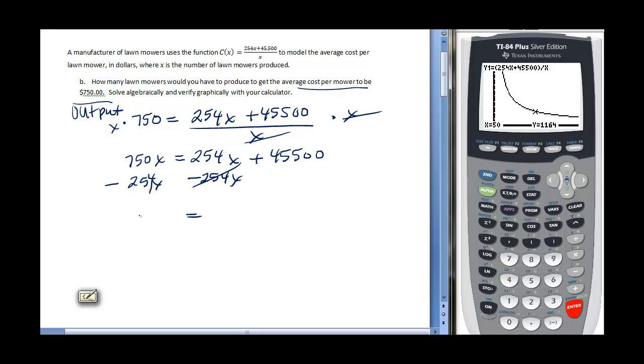On my right side, I still have my 45,500. Then to get X all by itself, I'd want to divide both sides by 496. So I have X equals 91.7.